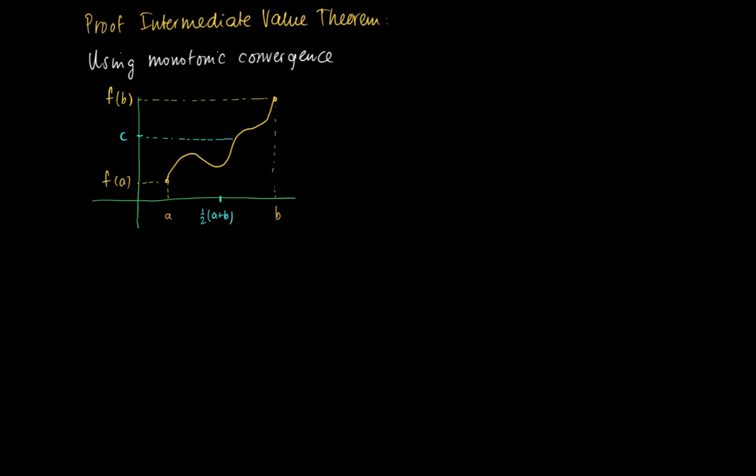What we do is consider the midpoint of the interval AB, which will be a half times a plus b. Then we start with the interval AB and consider the midpoint and look at the value of the midpoint in this interval. Then we will create a new interval.